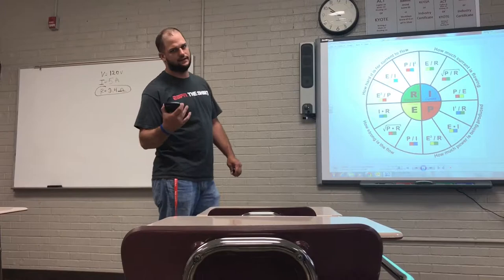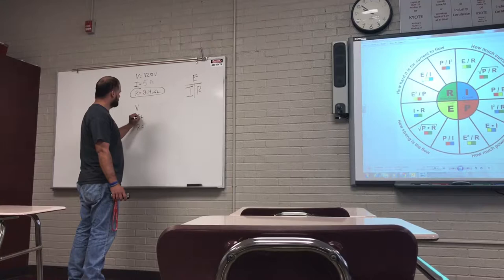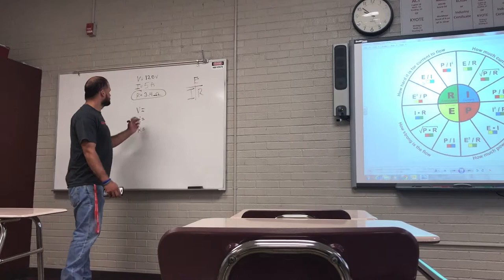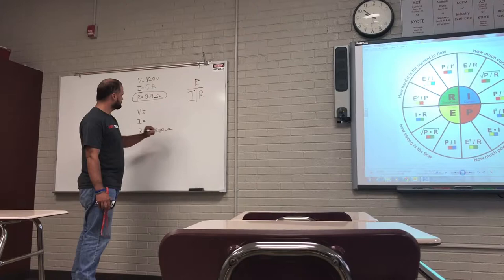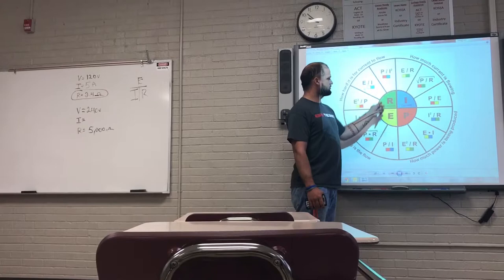Now let's do a problem for current. We're going to write this up the same way. We're going to do V, I, R. So we're going to look for current and current is amps. So we got say 5,000 ohms and 240 volts. So we're looking for I. So we're going to the chart, the formula in the center is what you're going to be totaling to and this is your current. So you're going to do, here you got E and R.